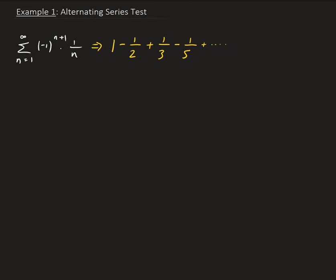And you can see that from here, that minus 1 to the n plus 1 gives us our alternating signs. All right, so there's two conditions that we have to check to see whether or not this series converges. And we're using the alternating series test here.